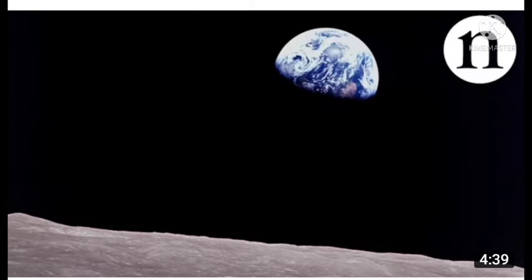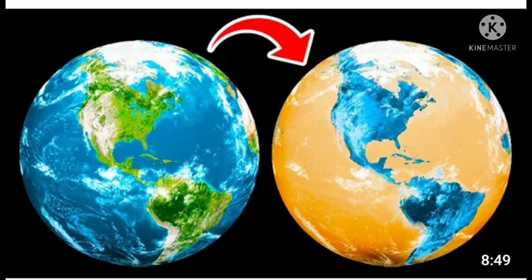It looks blue, that is why we say that it is a blue planet. So more than 70% of the earth's surface is covered with water, and 30% is covered with land.